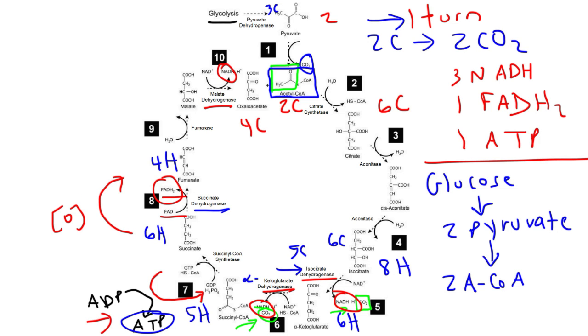So one glucose molecule is equivalent to two turns of the Krebs cycle. So one glucose molecule will yield six NADH molecules, two FADH2 molecules, and two ATP. So that's the net result of the Krebs cycle for one molecule of glucose. You get six NADH, two FADH2, and two ATP molecules.